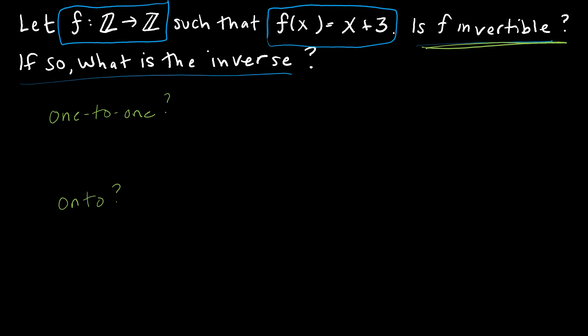Keep in mind, 1 to 1 asks us to determine, is every element in the range mapped to by just one element in the domain? So let's look at an example. If I say F of A is equal to F of B, that has to imply that A is equal to B.